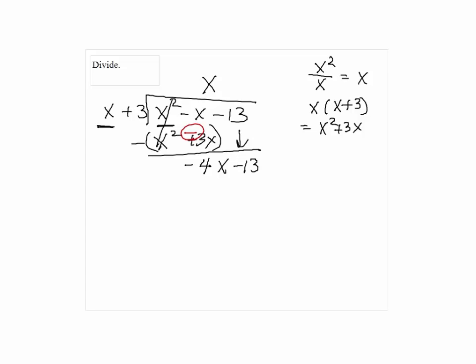And then bring down the next term. And we do the same procedure one more time. So we have negative 4X over X, which is negative 4. So that goes on top.